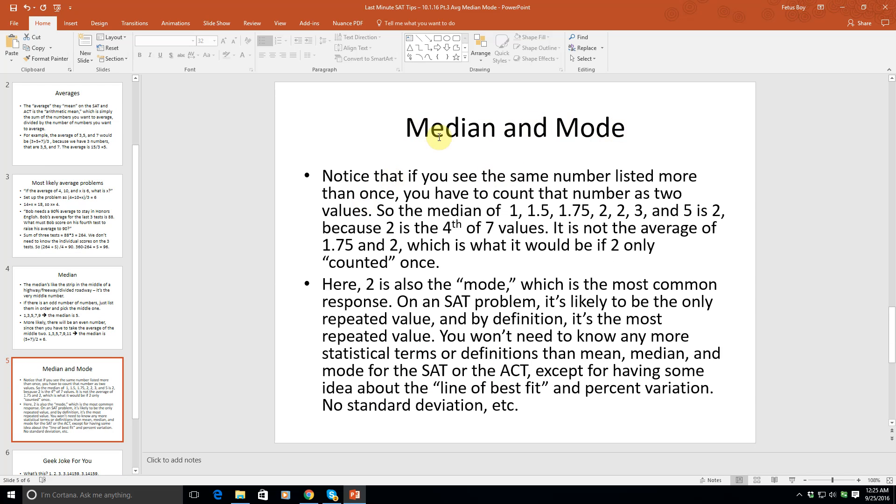Median and mode are probably the most advanced statistical concepts you'll need for the SAT. If you see the same number listed more than once, you must count that number as multiple values. For example, the median of 1, 1.5, 1.75, 2, 2, 3, 5 is 2 because 2 is the 4th of 7 values. You must count each occurrence of 2 as a separate value, so there are seven values total.